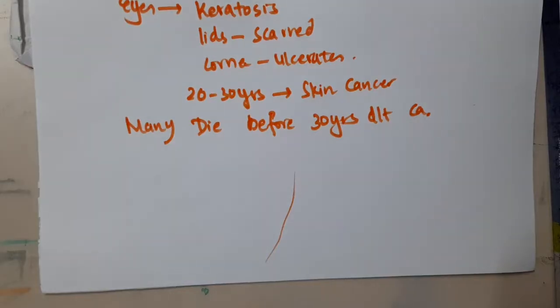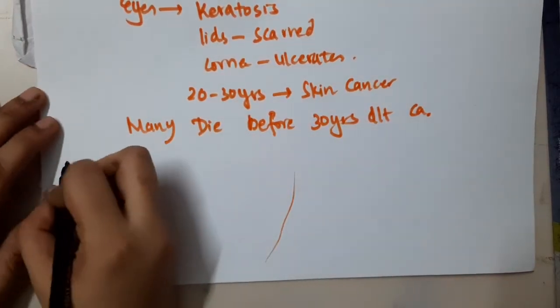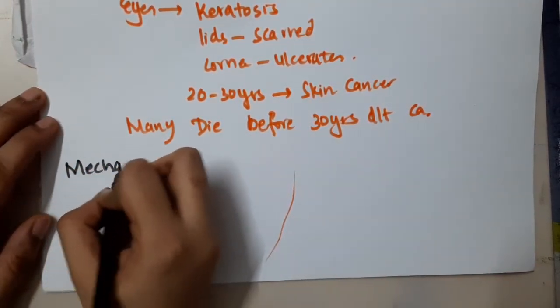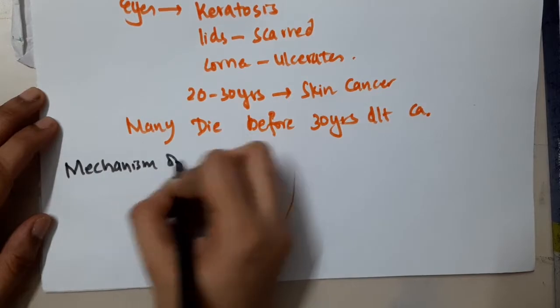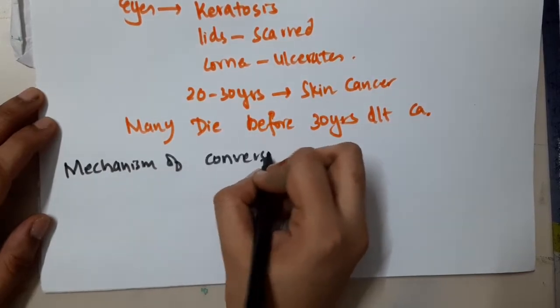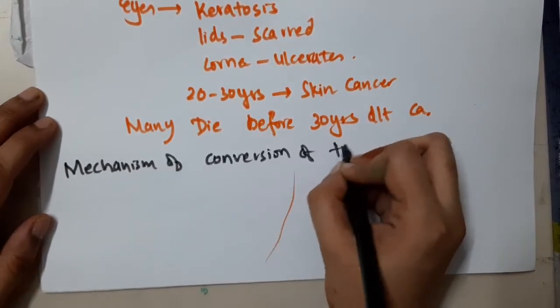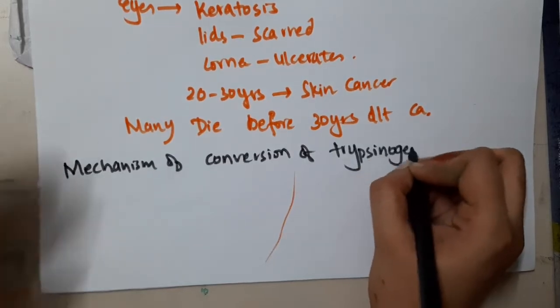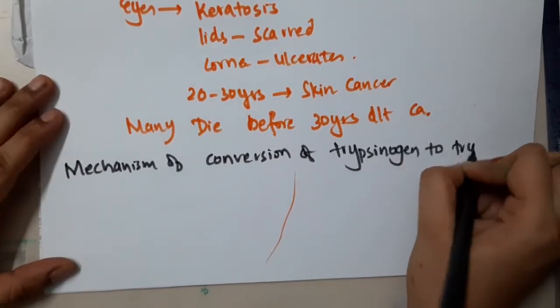Hello friends. A question was asked in NIC 2015: what is the mechanism of conversion of trypsinogen to trypsin? How is trypsinogen converted to trypsin?